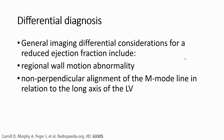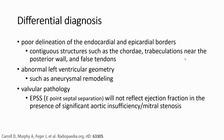Pitfalls and considerations for reduced ejection fraction measurement include regional wall motion abnormalities, non-perpendicular alignment of the M-mode line in relation to the long axis of the left ventricle, and poor delineation of the endocardial and pericardial borders due to contiguous structures such as chordal trabeculation near the posterior wall and papillary tendons.